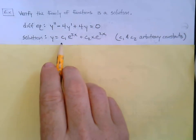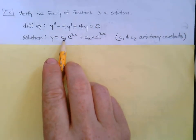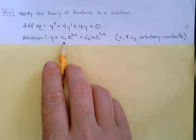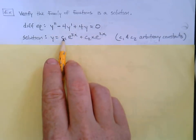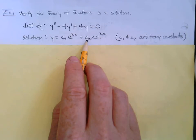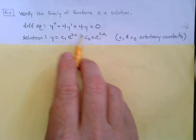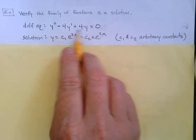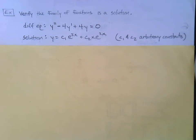For example, if you were to pick c1 equals 1 and c2 equals 1, that would be a solution. But if you were to pick c1 equals 2 and c2 equals 3, that would be a different solution — it would still solve that differential equation. That's the idea behind the family.